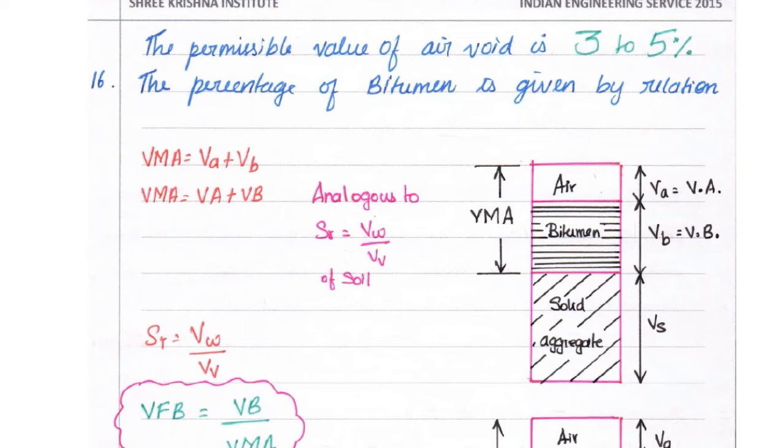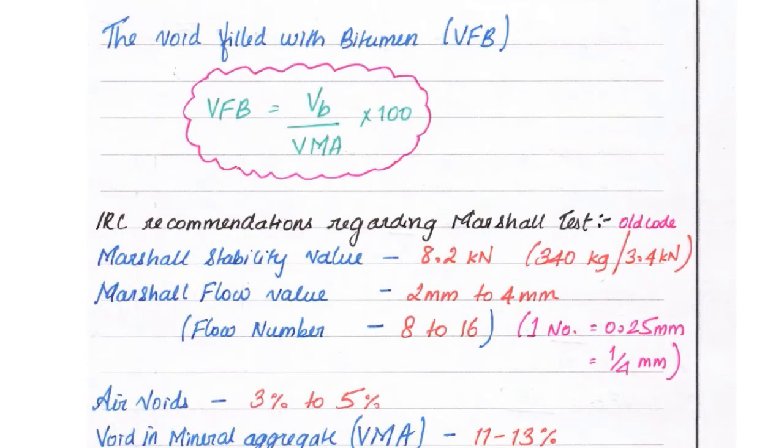The percentage of bitumen is given by relation VMA = Va + Vb, that is volume of air plus volume of bitumen. The void filled with bitumen, VFB = (Vb/VMA) × 100.